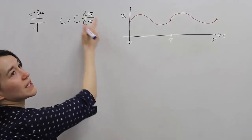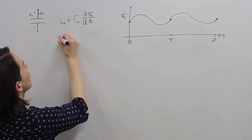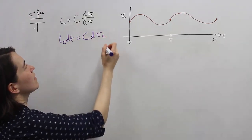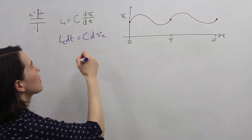So first, let's move dt over to this side. i_c dt equals C dv_c. That looks kind of weird, let's integrate both sides.